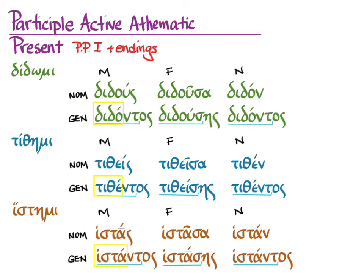For tithemi, it's titheit, tithesa, tithen, tithentos, titheses, tithentos. And for histemi, it's histas, histasa, histan, histantos, histases, histantos. Now, it can be a help to remember how these decline if you look at some models that you already know.